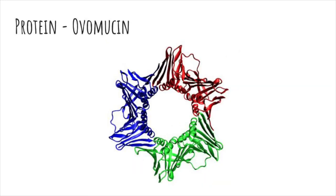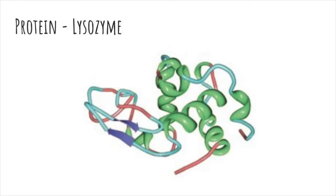Ovomucin is a relatively small protein whose amino acid chain includes a wide variety of carbohydrates. Because of its polar character, ovomucin forms hybrid-type structures. The high viscosity of the egg white layers is a consequence of the high ovomucin content.